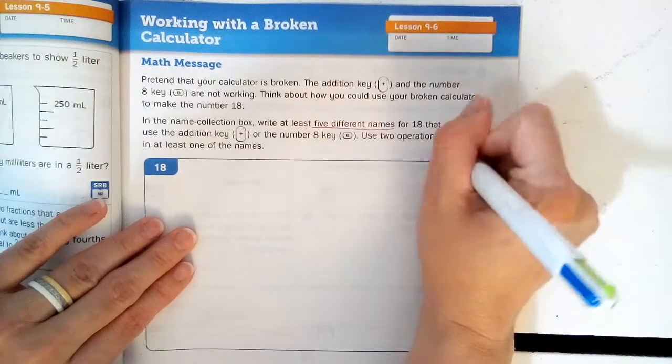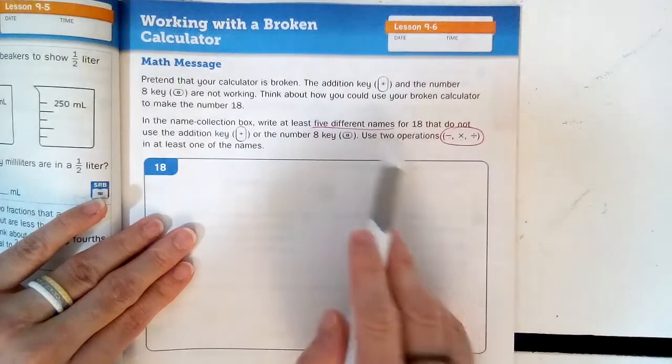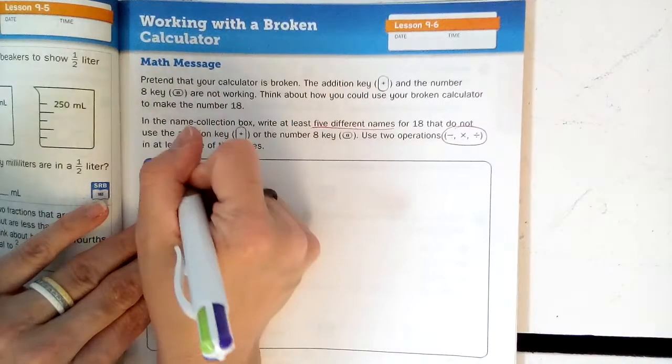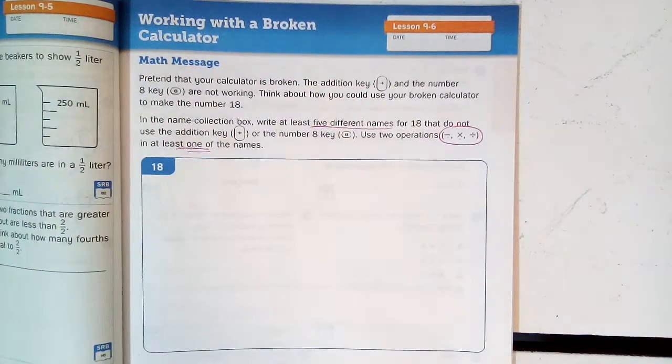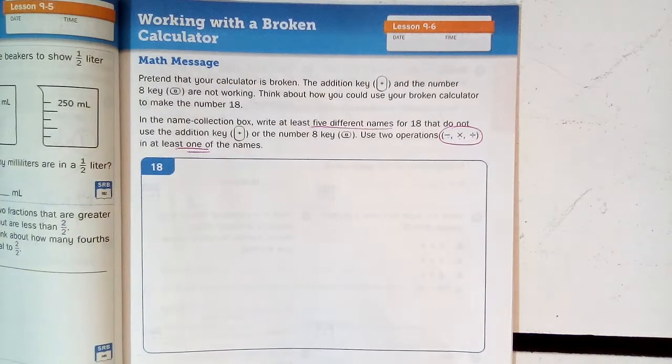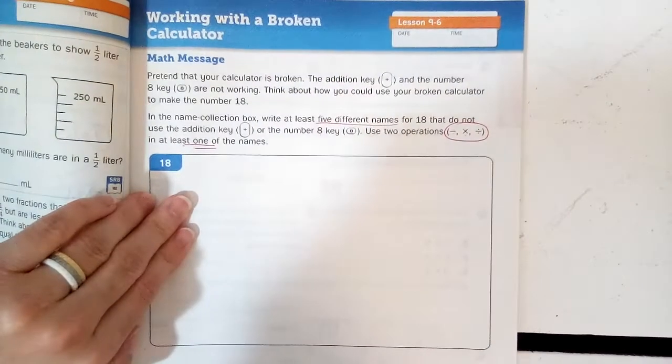We have to use subtraction, multiplication, and division. And they want us to use two operations in at least one of the names. So that means they want us to do subtraction, or division, or multiplication, in one way. So let's think of a way to make 18.